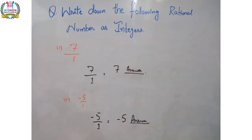The next question is: write down the following Rational Numbers as Integers. Simply you can write these Rational Numbers in the form of Integers, meaning you simplify the fraction. So 7 upon 1 — the answer is 7, and we can write this as an integer. Next is minus 5 upon 1, and again we can write this as minus 5.